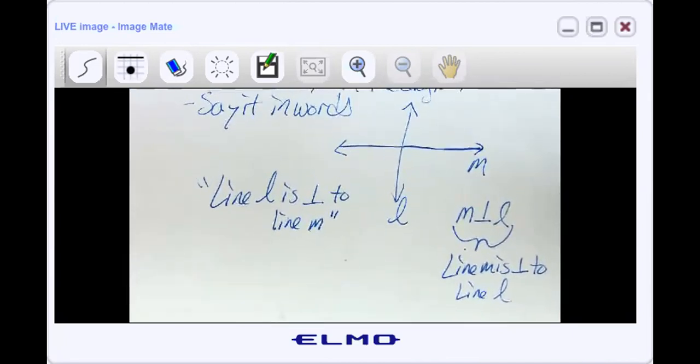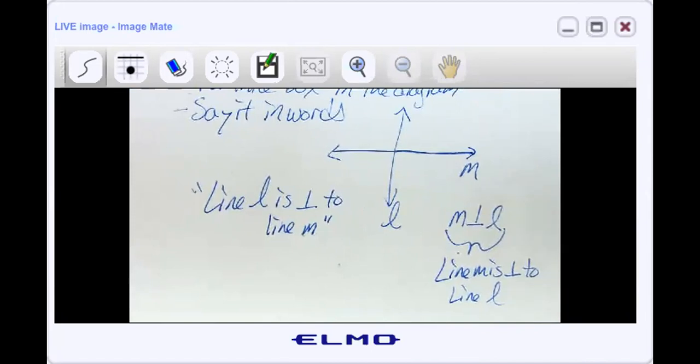So that notation right there, M with that upside down T and then L, this notation means line M is perpendicular to line L. So that's another way that you might see it done out in the diagram. Honestly, the easiest way is to just put the little box in there, right? That's so simple.